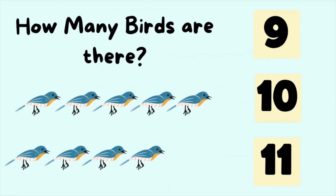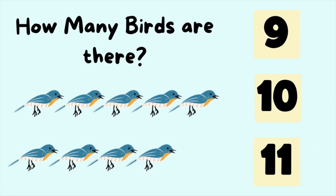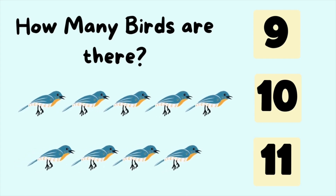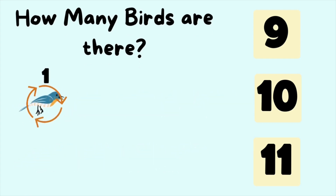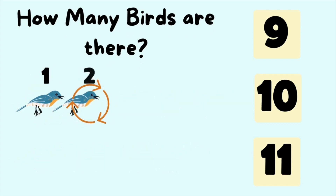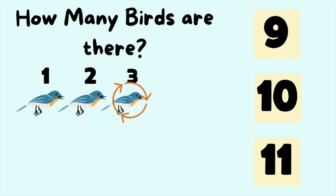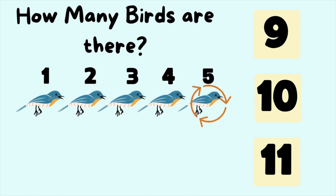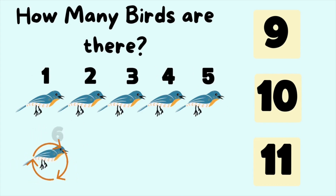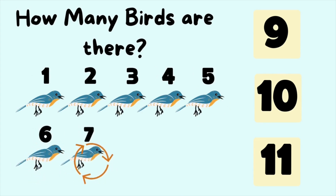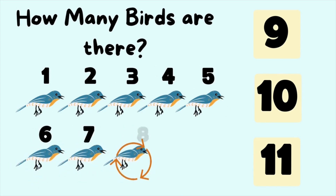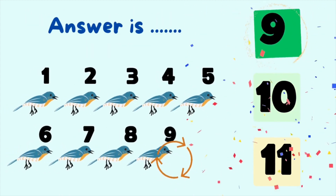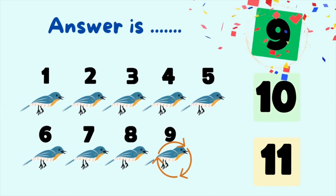How many birds are there? Let's count the number of birds. It is one, two, three, four, five, six, seven, eight, nine birds. So the answer is nine birds.